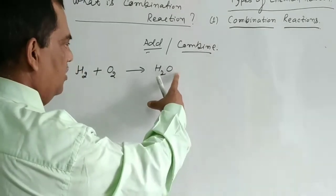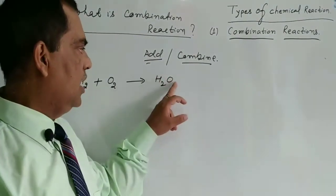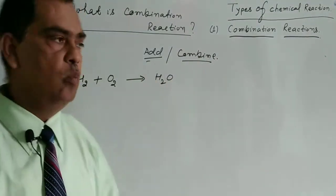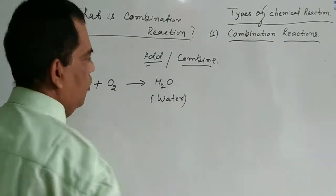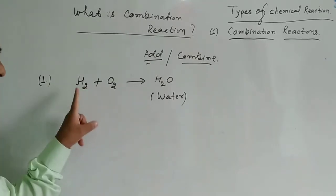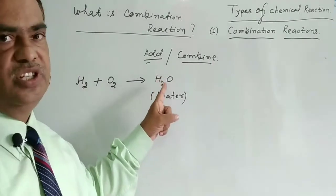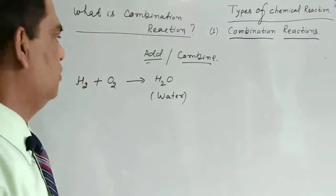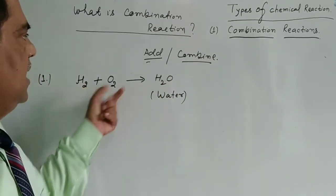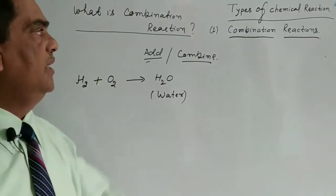Using the criss-cross method, hydrogen's valency goes to oxygen and oxygen's valency goes to hydrogen. So the formula formed is hydrogen oxide H₂O, which is water. In this reaction, you can see that the two substances — hydrogen gas and oxygen gas — after the reaction form a single substance: water. Two substances combine to form one new single substance, so this reaction is a combination reaction.